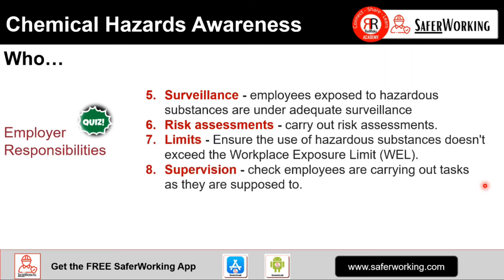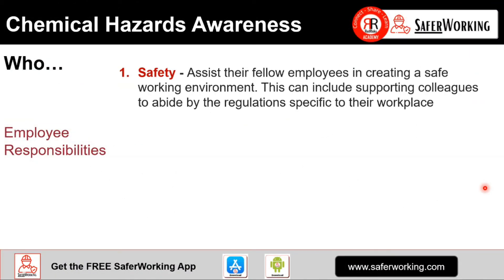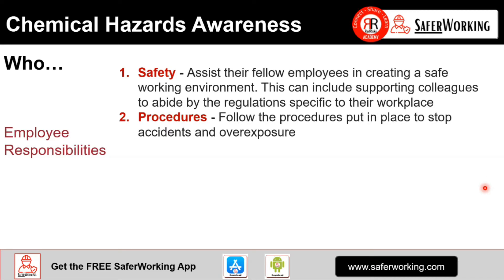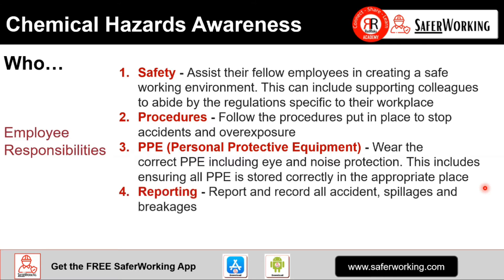It's important to recognise that it's not just about employers' responsibilities — employees also have a responsibility. They need to look at it from a safety perspective, assist their fellow employees in creating a safe working environment, and make sure that procedures are followed and put in place to stop accidents and overexposure. Employee responsibilities are also focused on PPE — and as covered in the hierarchy of controls video, PPE is the least desirable option — as well as reporting.